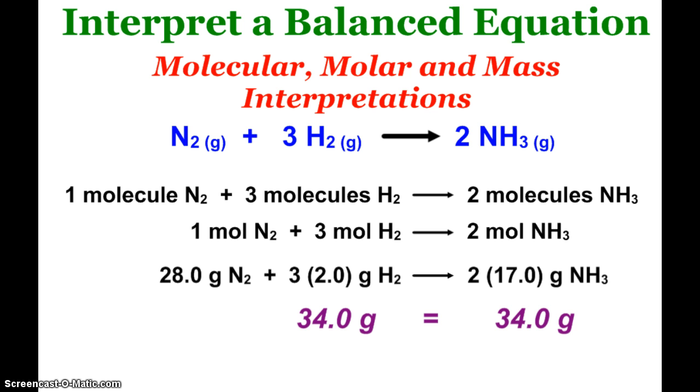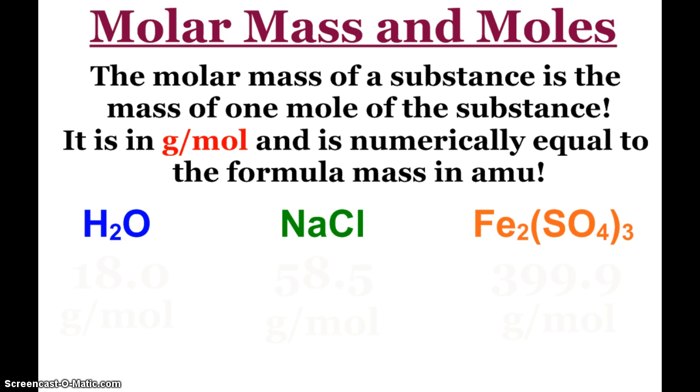Ammonia, NH3 is 17. Again, where do these numbers come from? Those are our molar masses.